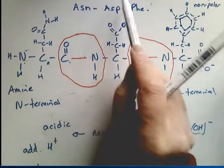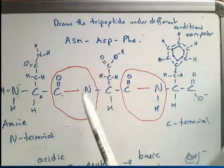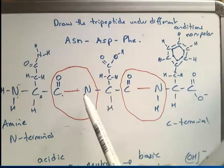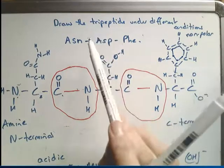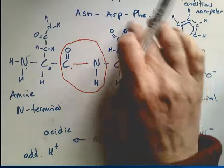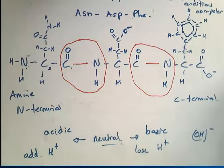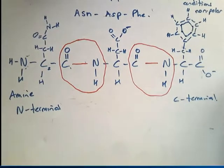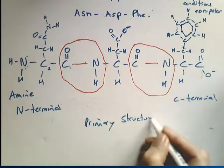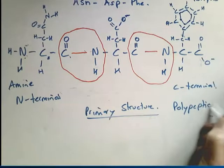This is a tripeptide because it has three amino acids, but it only has two peptide bonds — a dipeptide has two amino acids and one peptide bond, so the naming is a bit misleading. This represents the primary structure of a polypeptide — in this case a tripeptide — drawn under basic conditions.